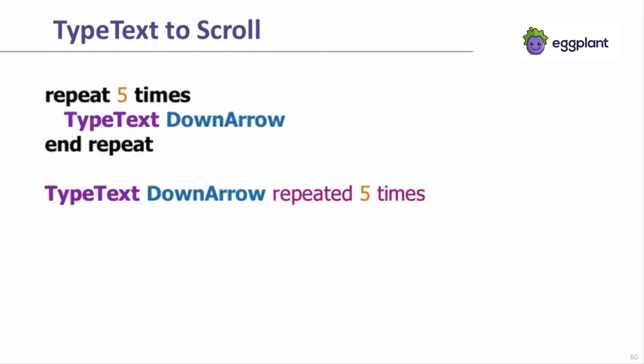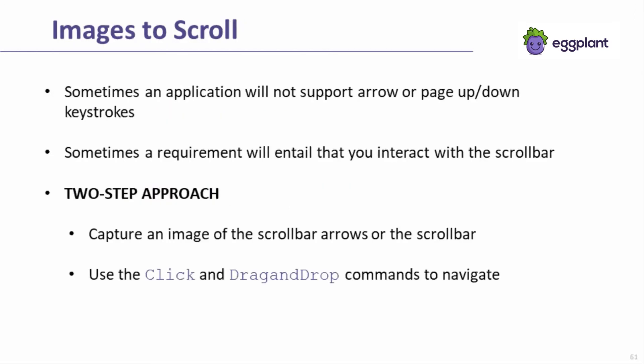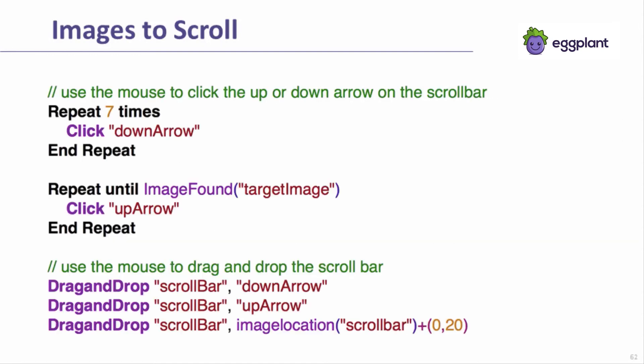Often, scrolling events are repeated because multiple scrolling events are needed to reveal the desired element on the screen. Occasionally, the exact number of needed scrolling events is known. These examples show how to perform a scrolling event a specific number of times. In the repeat loop example, the frequency of each type text command is governed by a runtime setting known as the remote work interval. In the second example, the frequency is governed by the next key delay. Images can also be used to scroll. Capture images of the scroll bar arrows or the scroll bar itself, and then use the click or drag and drop commands to interact with the scroll bar. Note how the drag and drop example incorporates the image location function to specify an end location relative to the start location of the drag event.